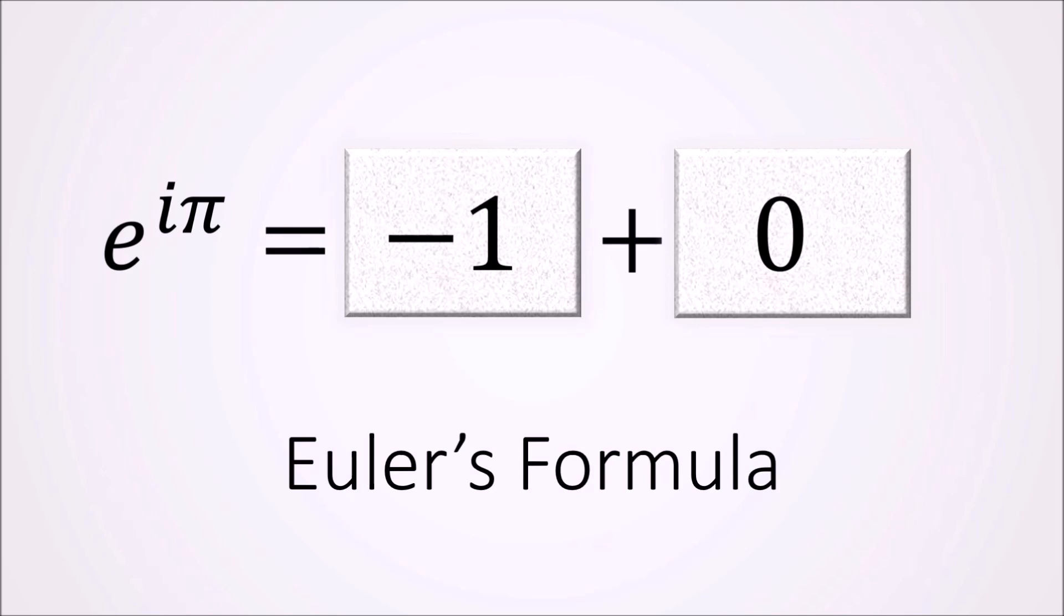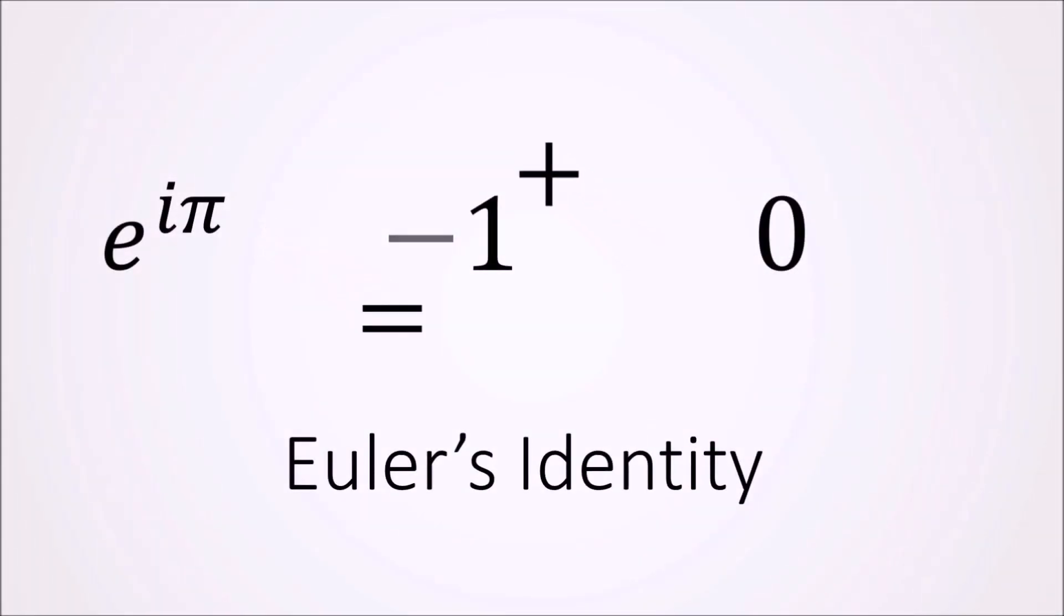E to the power of i times pi equals minus 1. A little shift and we get E to the power of i times pi plus 1 equals 0.